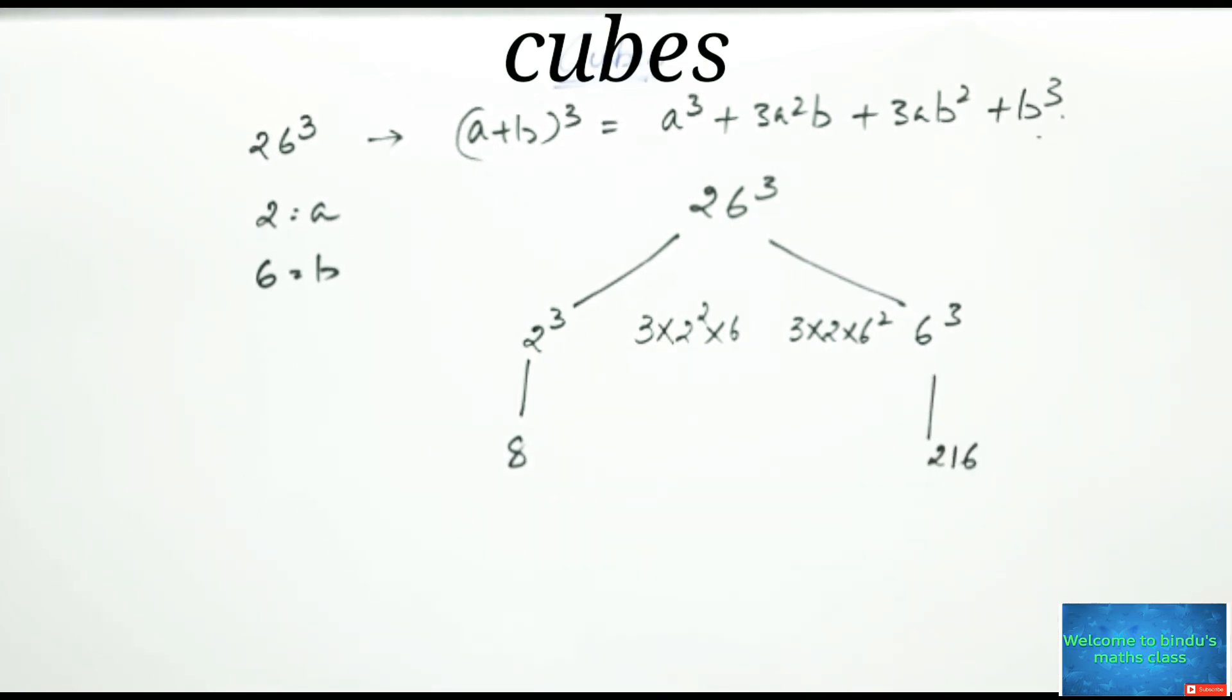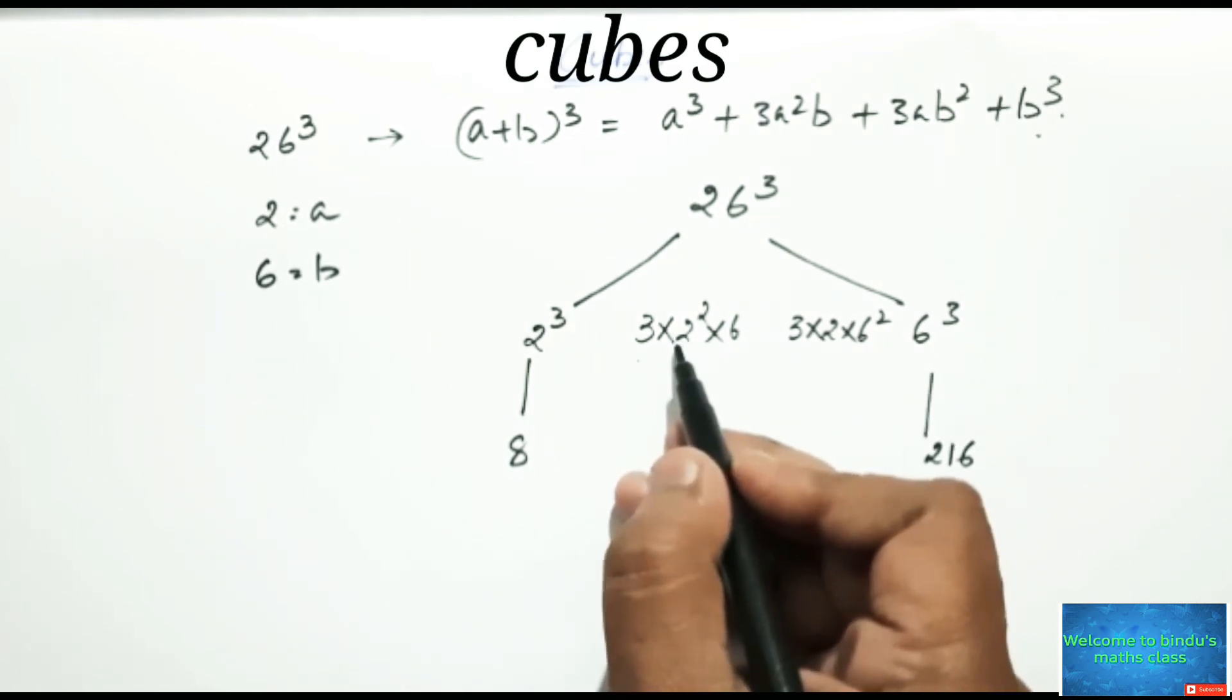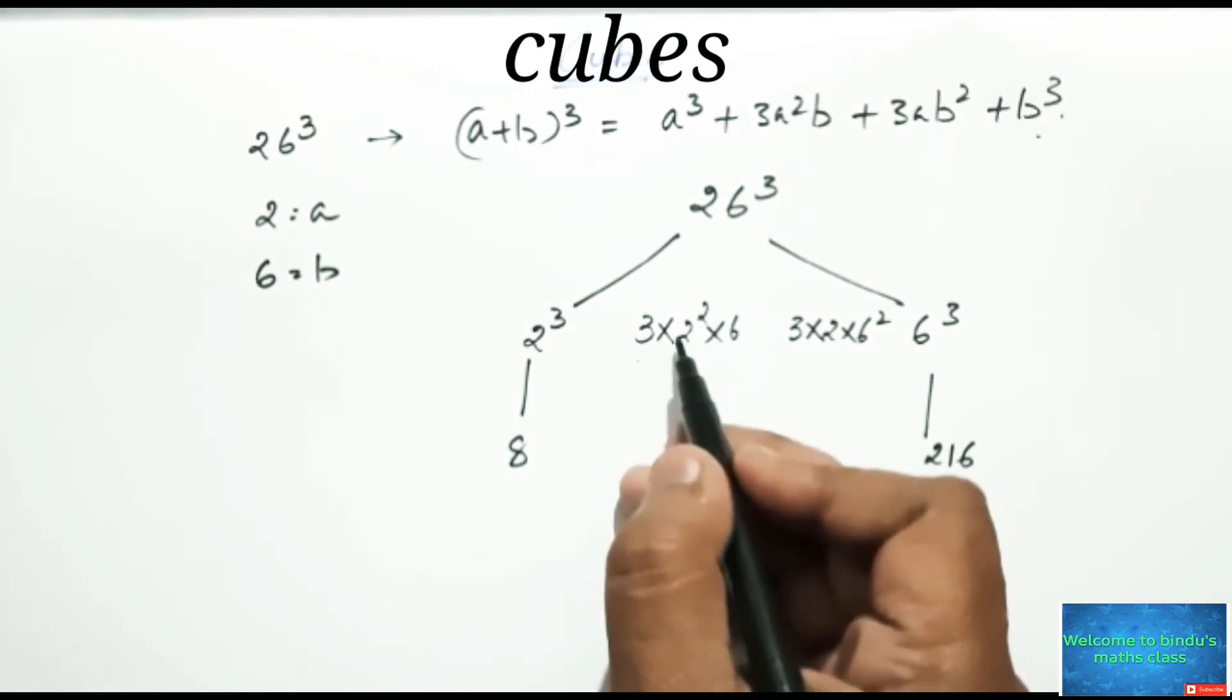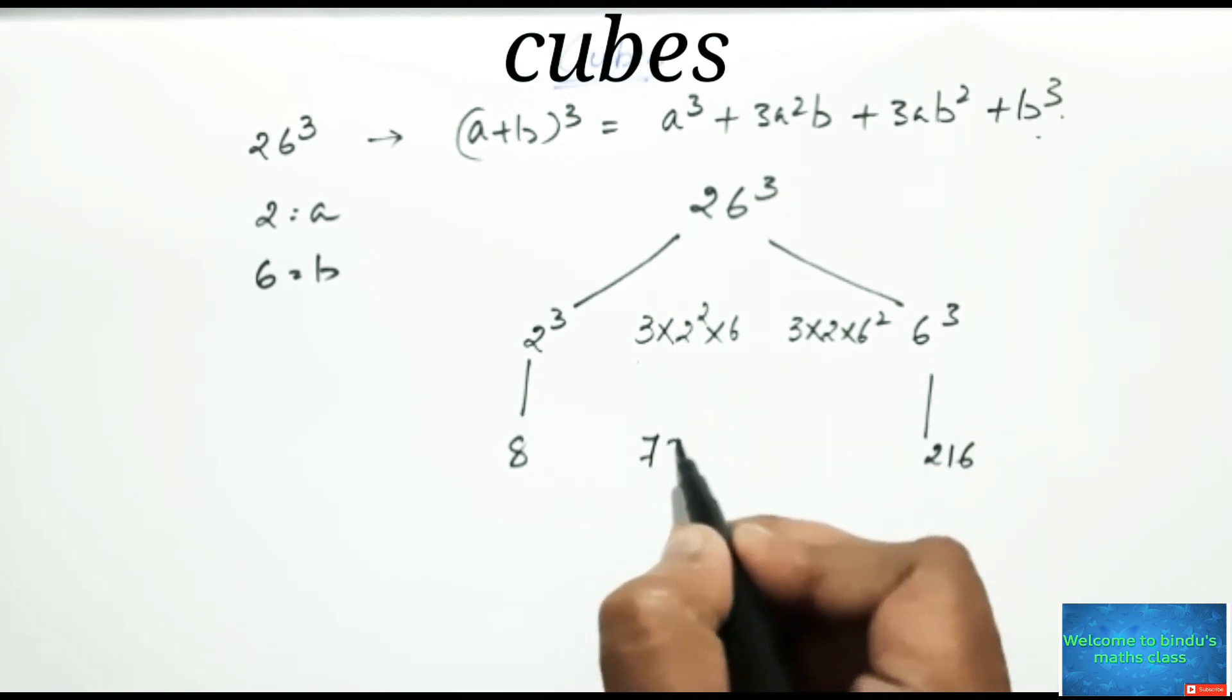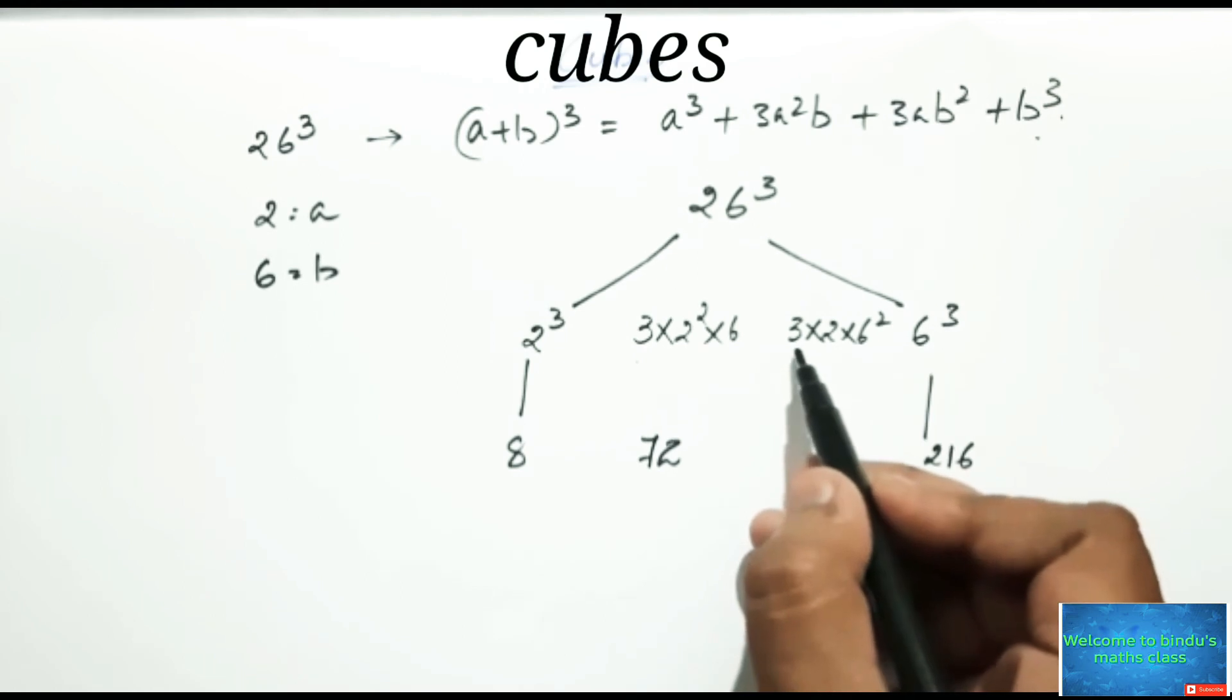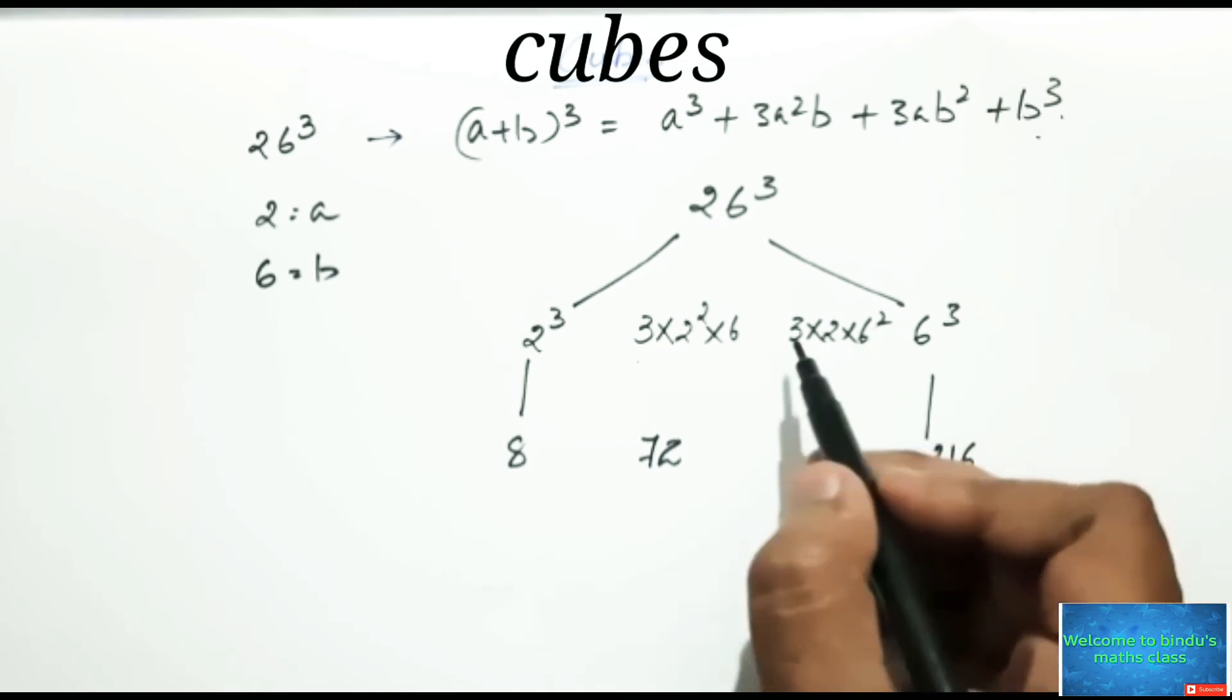And here see 3 into 2 square means 4, 3 into 4 is 12, 12 into 6 is 72. Please write down like this. And here 3 into 2 is 6, 6 into 6 square, 6 square means 36, 6 into 36 is 216.